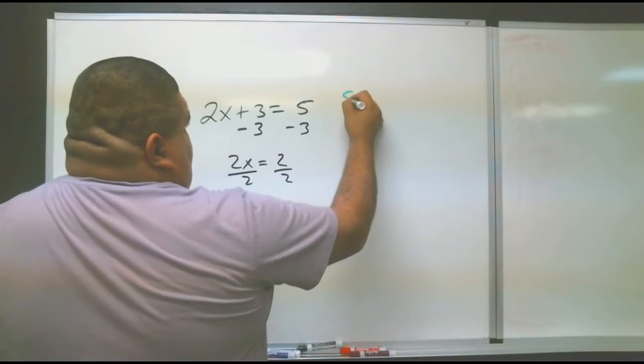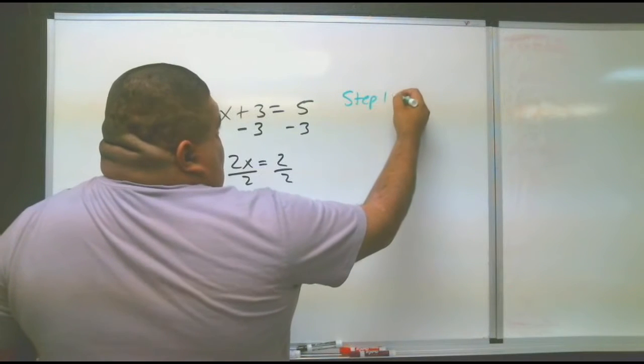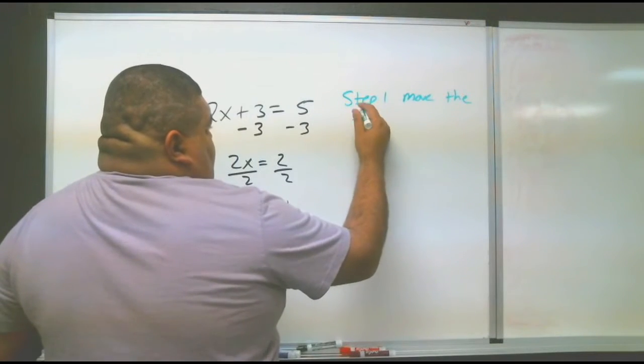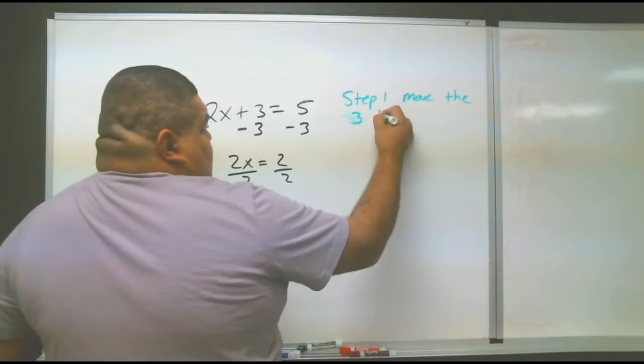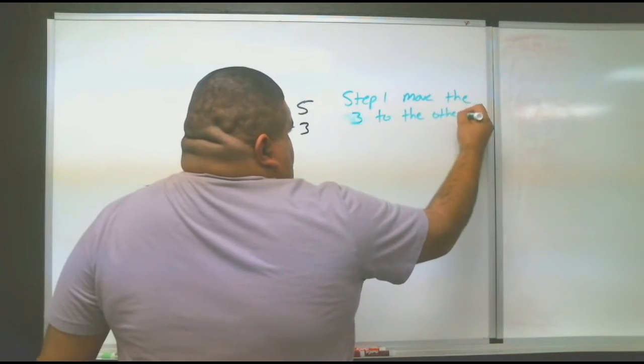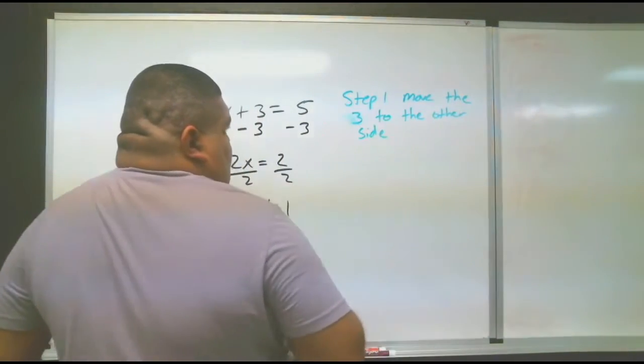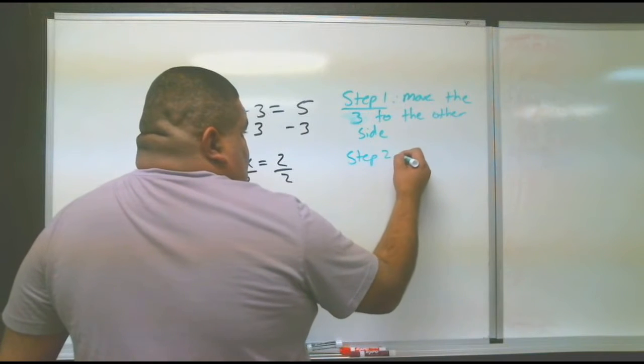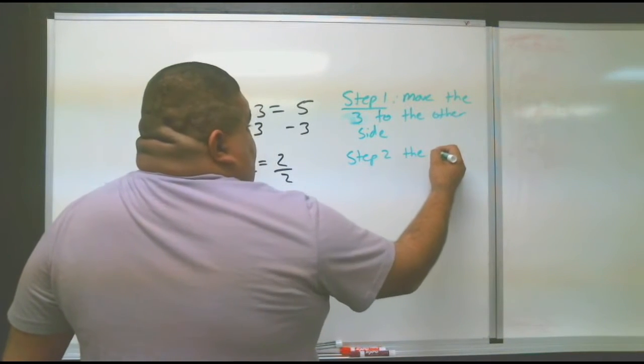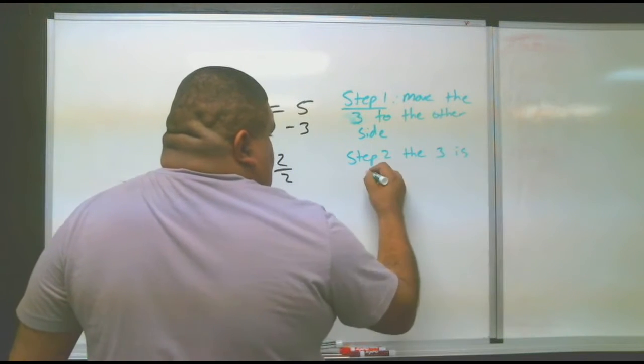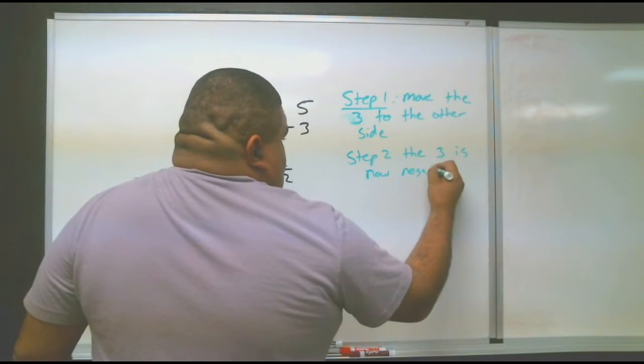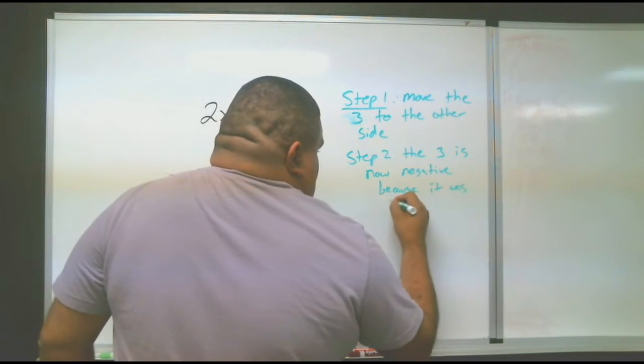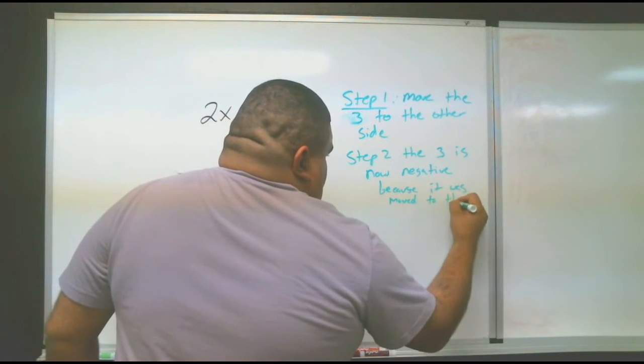I mean, for example, step one: move the three, you can either write you can even write number three to the other side. Step one to the other side.